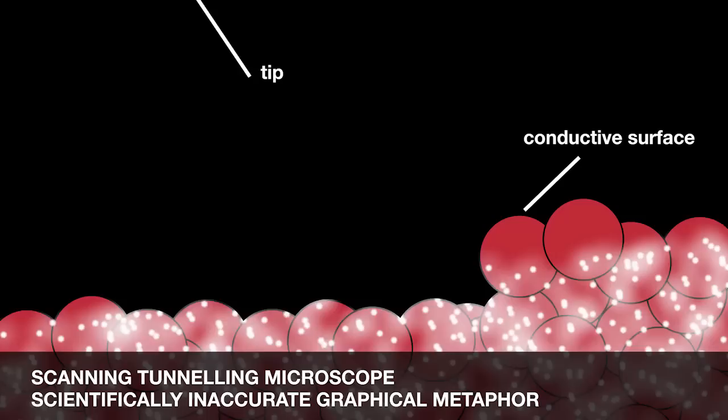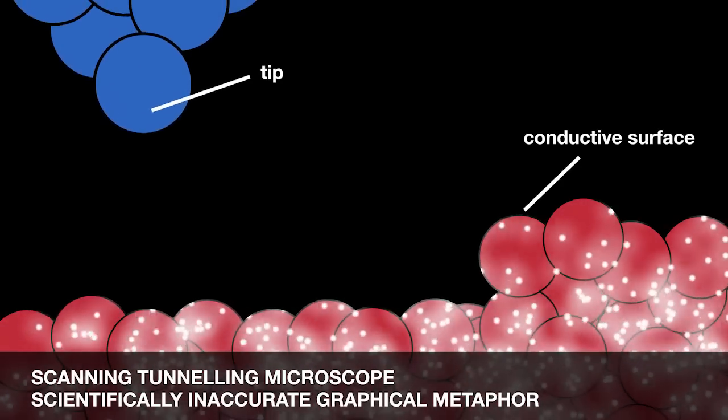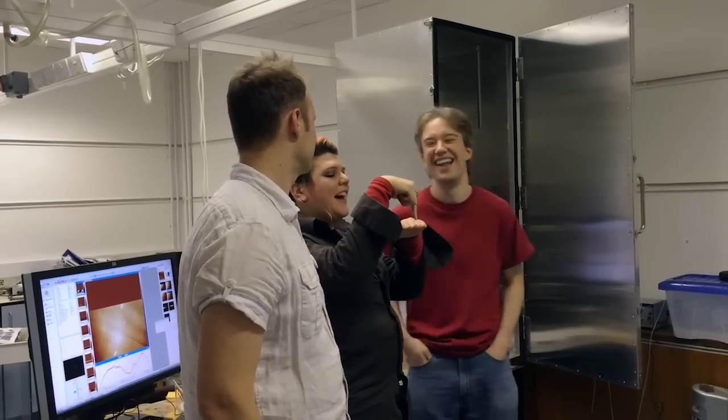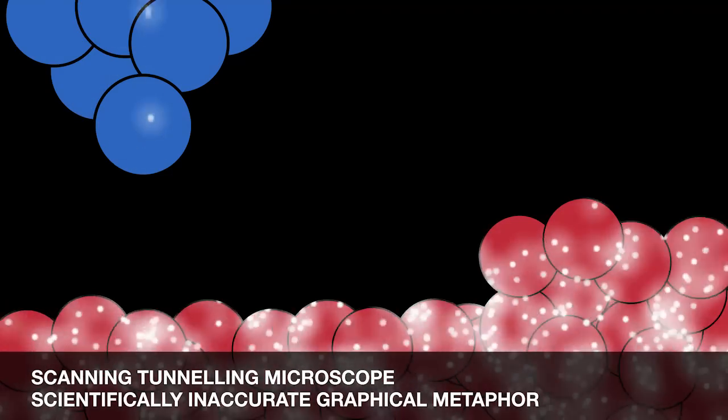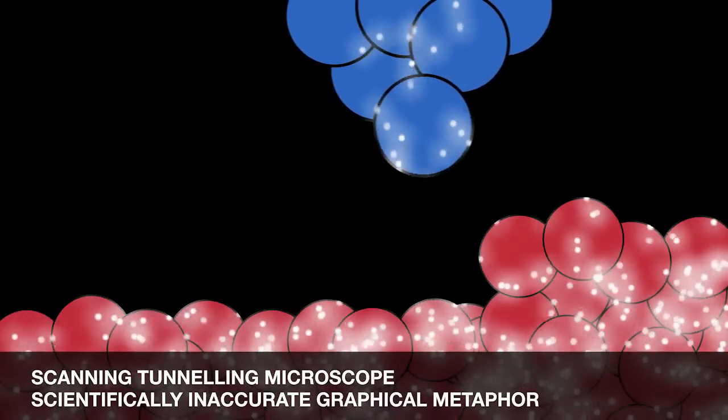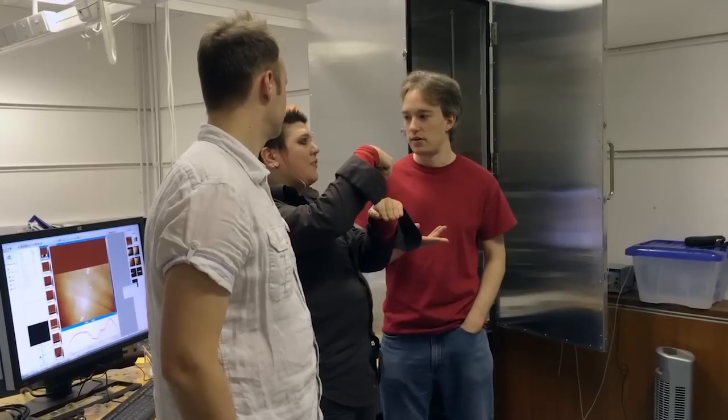It uses the fact that if you bring a tip close to a surface there's a probability that because of quantum mechanics the electrons will tunnel from the surface to the tip. So basically as you move the tip along, if you hit a bump, more electrons will tunnel up into the tip and that will give you an idea of how close the surface is.